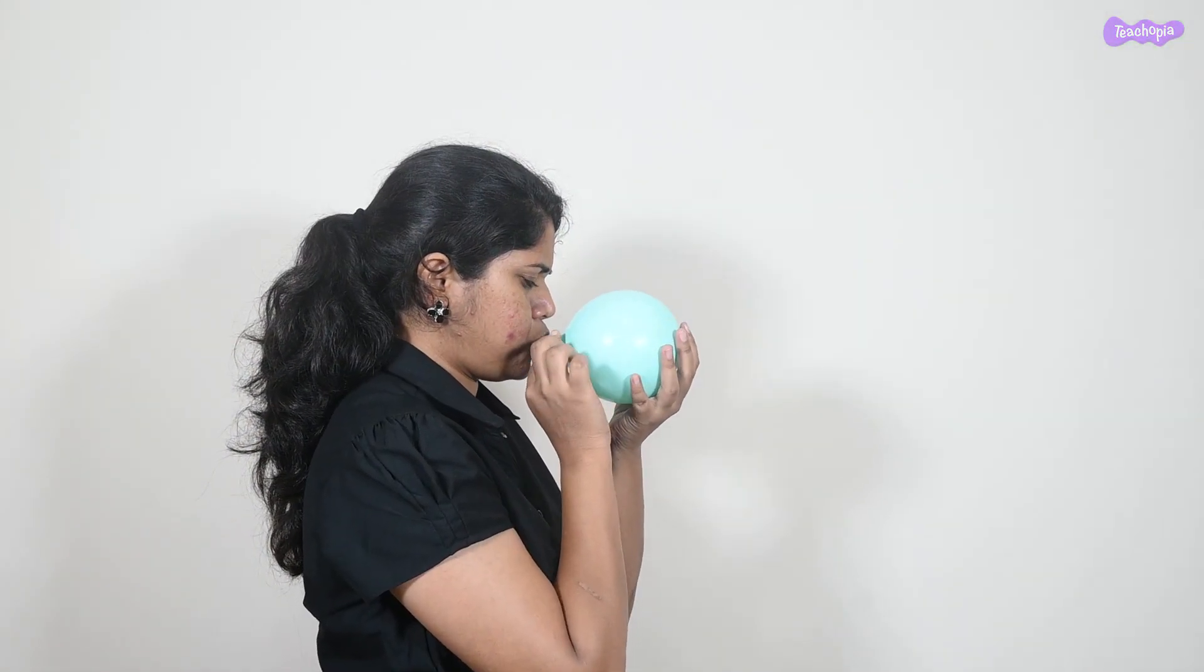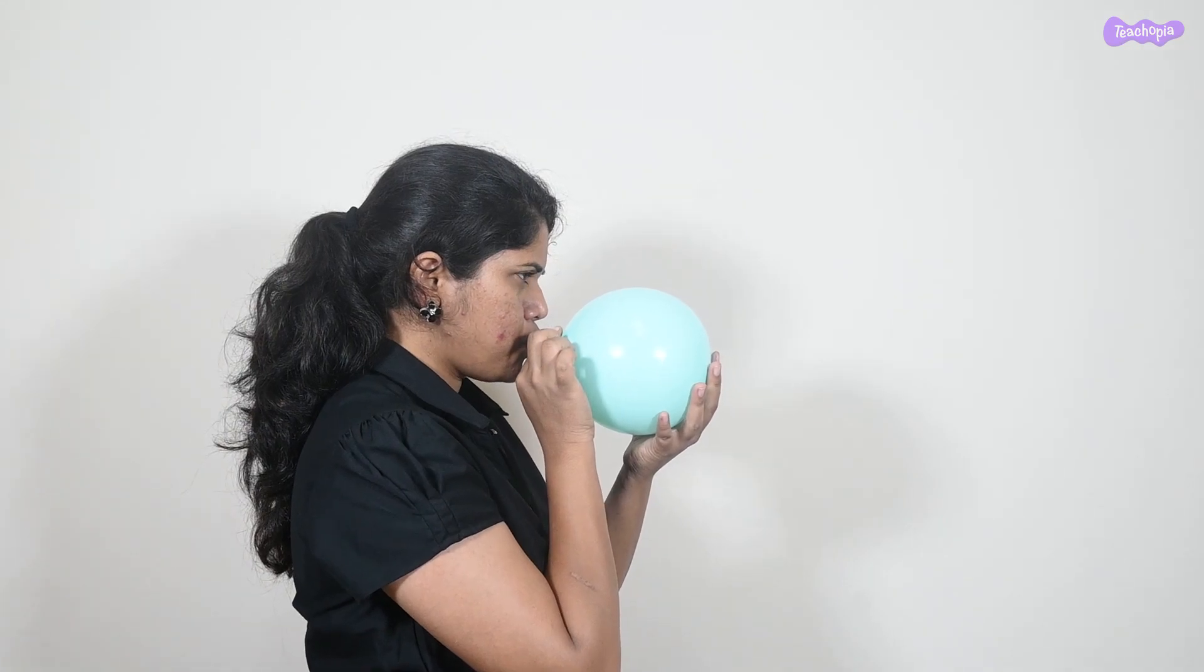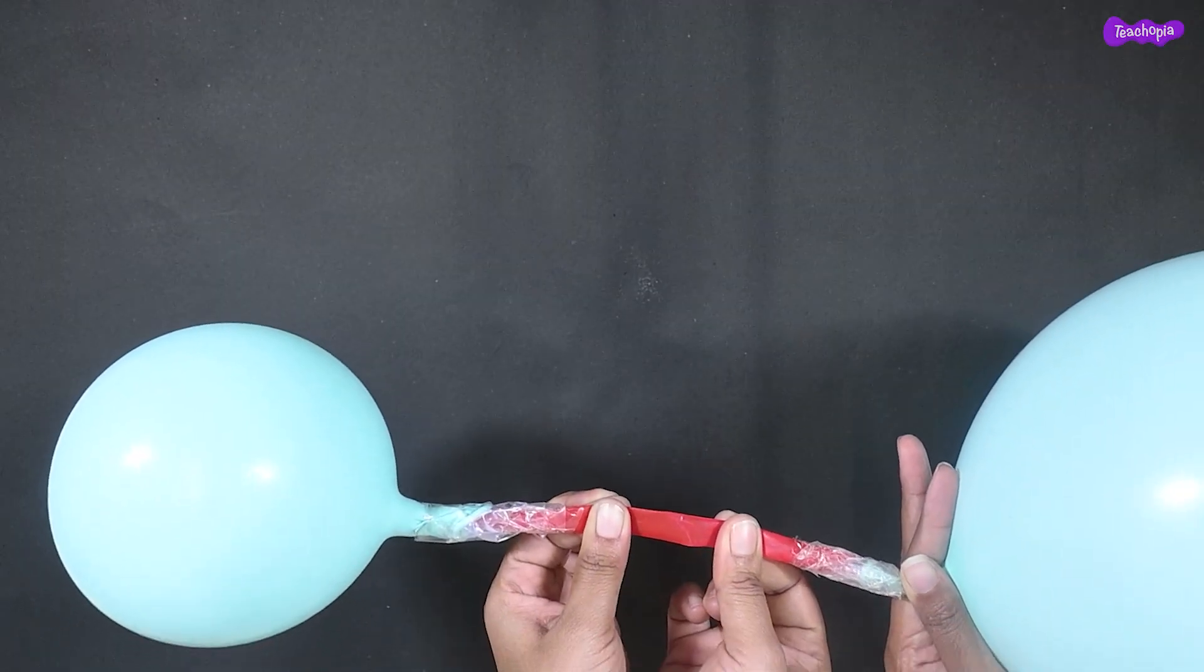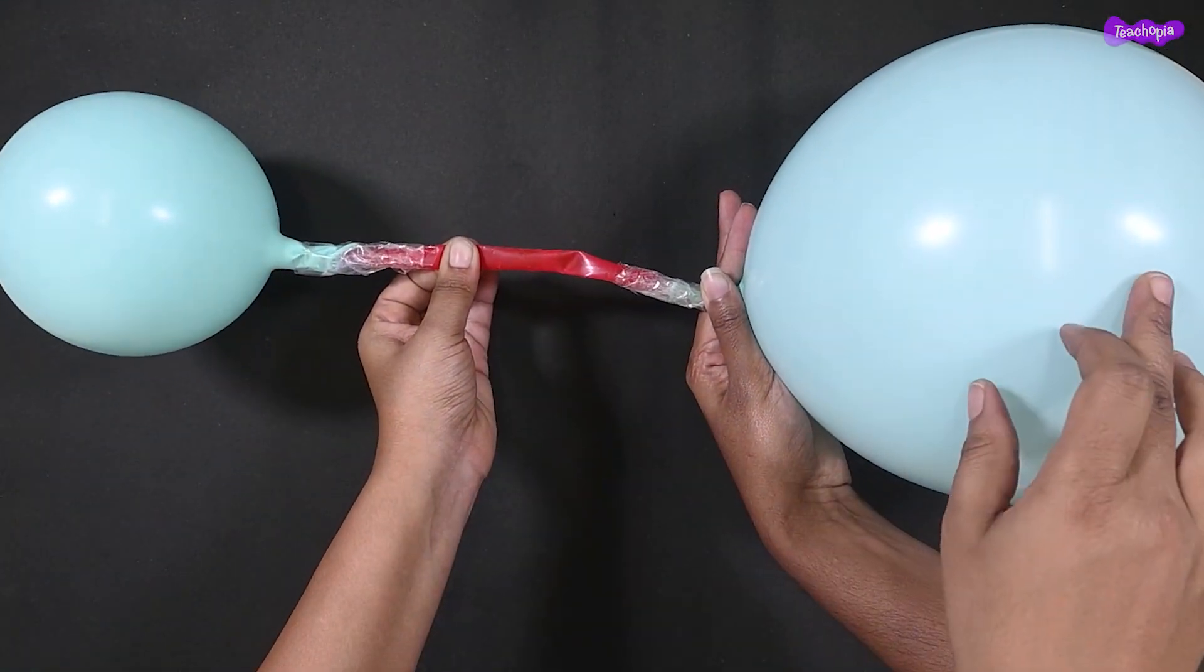Take another balloon and blow it to a bigger size. Attach this big balloon to the free end of the straw.